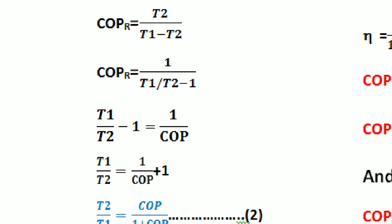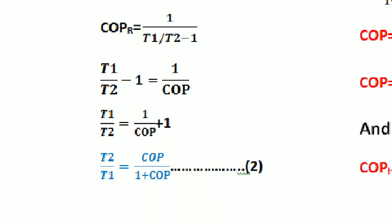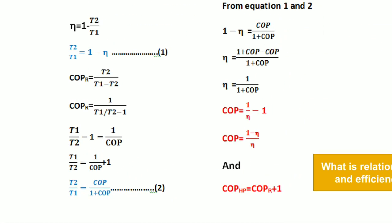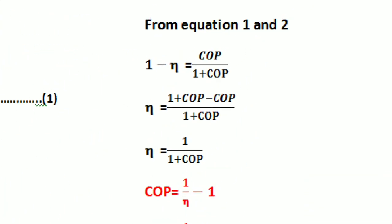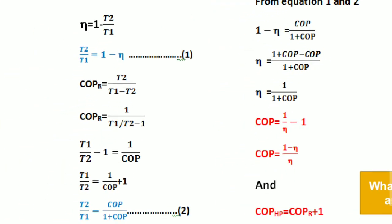Then T1/T2 = 1/COP + 1. Taking the 1 to the right-hand side and reversing, T2/T1 = COP upon (1 + COP) — mark this as equation 2.